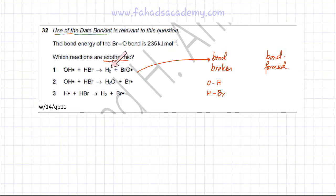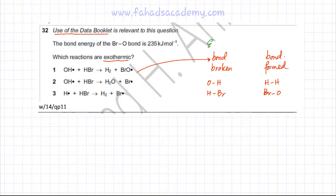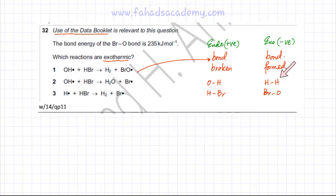For bonds being formed in this first reaction: an H–H bond is being formed since there's a hydrogen molecule in the products, and a BrO bond is being formed as well. Remember that breaking bonds is an endothermic process, so those energy values will have a positive sign, while bond formation is an exothermic process, meaning those energy values will have a negative sign.